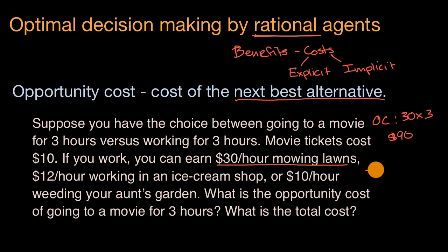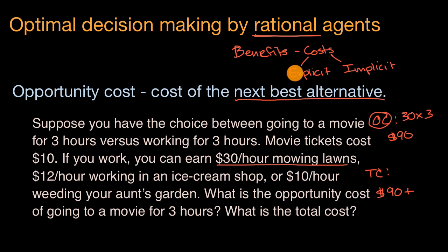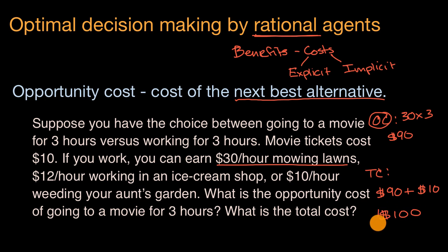Now what would be the total cost? The total cost would be the sum of the implicit cost — of which opportunity cost is an example — plus the explicit cost. The implicit cost is $90, which is the opportunity cost of not mowing lawns. To that, you add the explicit cost of the movie ticket at $10. So the total cost of going to the movie is $100.